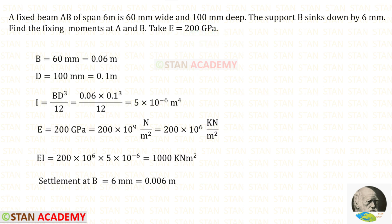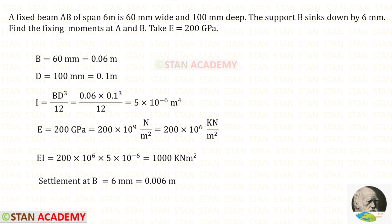Let us convert the breadth and the depth into meters. For that we have to divide them by 1000. For the breadth we will get 0.06 meters and for the depth we will get 0.1 meters. Now let us find the moment of inertia I. The formula is bd³ upon 12. Let us apply the breadth and the depth. For the moment of inertia we will get 5 × 10⁻⁶ m⁴.